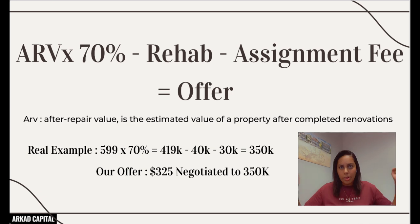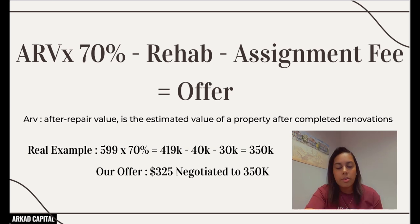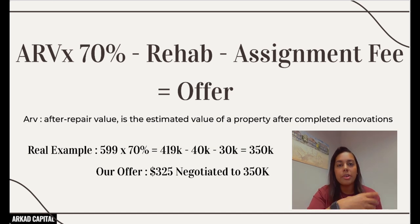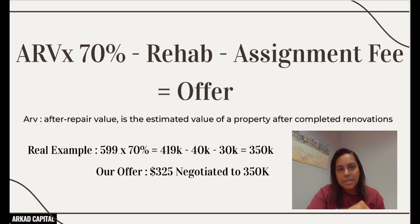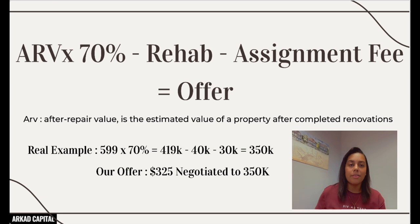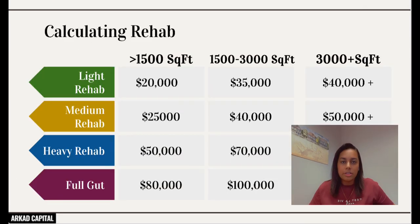Unless they're absolutely dead set on a number, in which case you can give in — 'you drive a hard bargain, I'll give you the $350,000.' It really depends on the homeowner. Always try to have wiggle room to negotiate. The 70% rule works — we're actually locking up this property soon. If you need to go higher, try 75%, but try not to go past 80% or you'll have a hard time finding a buyer.